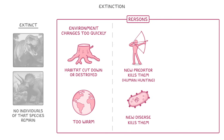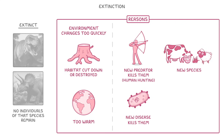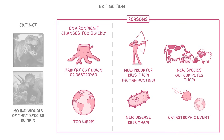A common reason for extinction is that a new species comes along and out-competes them for food or some other resource. Or, more rarely, a catastrophic event might occur, such as the asteroid that hit Mexico and wiped out the dinosaurs 66 million years ago.